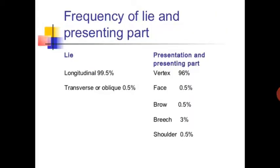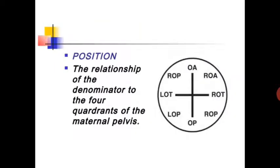The frequency of lie and presenting part: longitudinal lie occurs in 99.5% of cases, while transverse or oblique lie accounts for 0.5%. For presentation: vertex presentation is 96%, face is 0.5%, brow is 0.5%, and breech presentation is 3%.